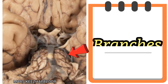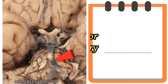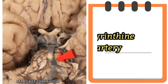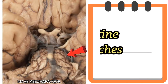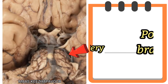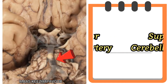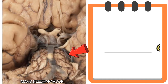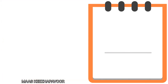The branches of basilar artery are anterior inferior cerebellar artery, labyrinthine artery, pontine branches, superior cerebellar artery, and posterior cerebral artery. Shall we now see the next question?